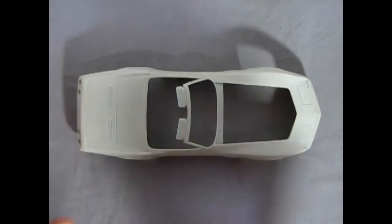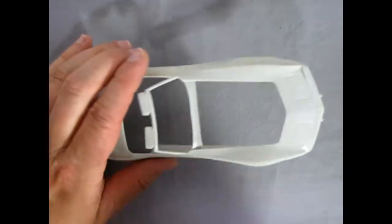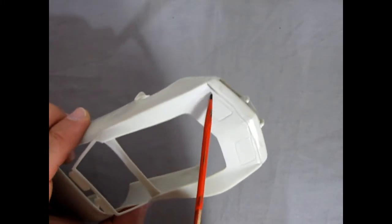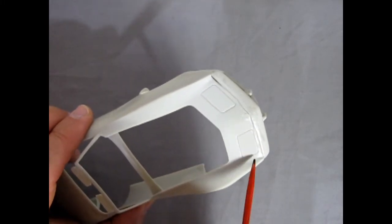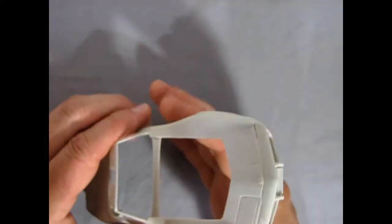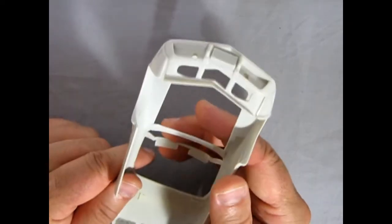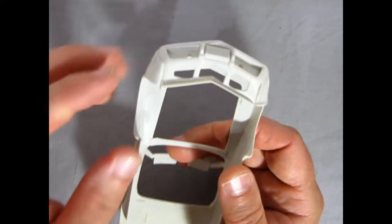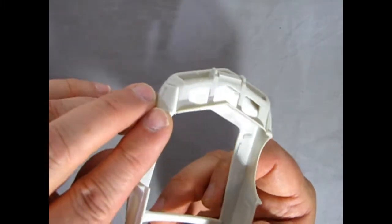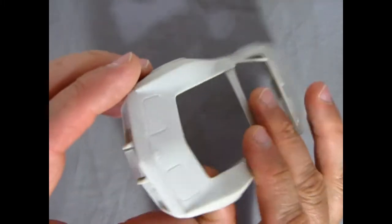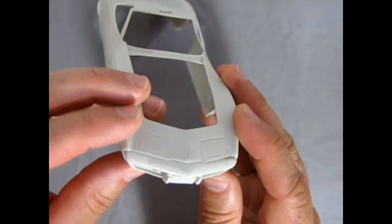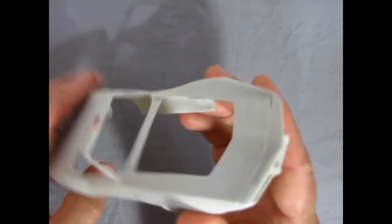Now the only downside to this model kit is that the front bumper actually does have a bit of a fit issue. As you can see here there's quite a big gap. Now this is a model kit that I was working on earlier before I did the reviews, and as you can see again the front bumper does have a gap issue on it. But you know with a little bit of putty work this should look really good overall.